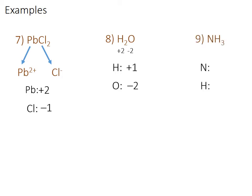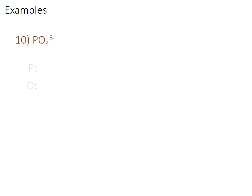Example nine, NH₃: I've got N and H. I always try H with a plus one, so that gives me a plus three. That means I must have a negative three with the nitrogen because it has to add up to zero. Example ten, phosphate: I've got P and O. I start by trying oxygen with a negative two, and four negative twos will give me a minus eight. Since the overall charge has to be a negative three, that means I'm going to try phosphorus with a plus five. I check the pink sheet — it can be a plus five. So I'm all good.